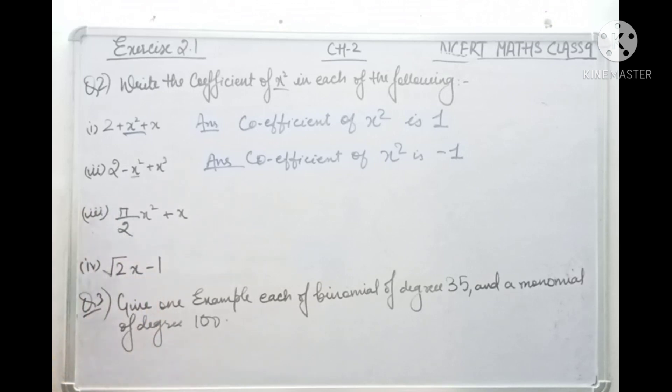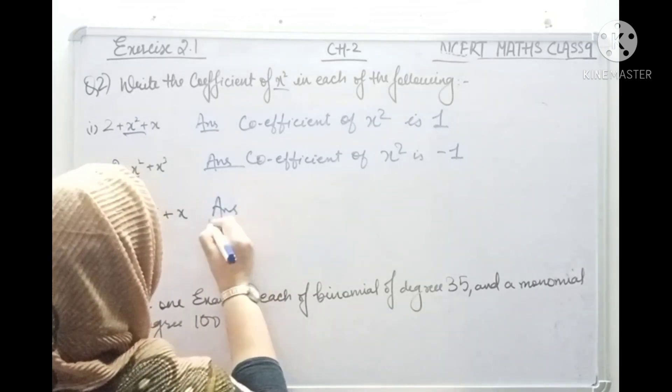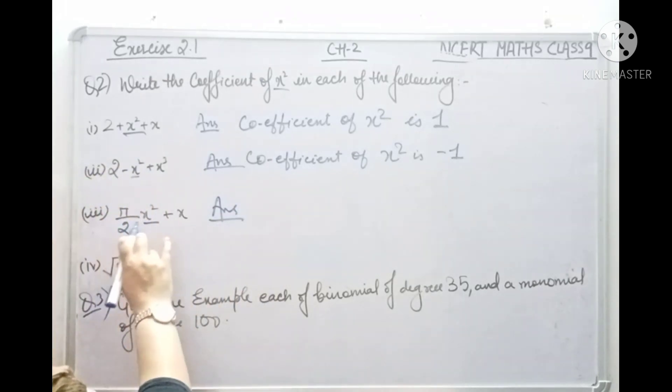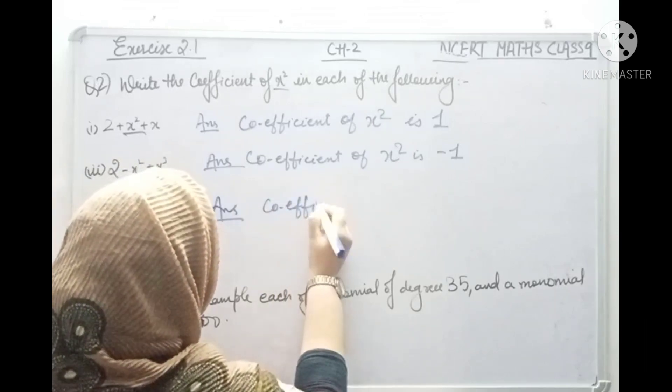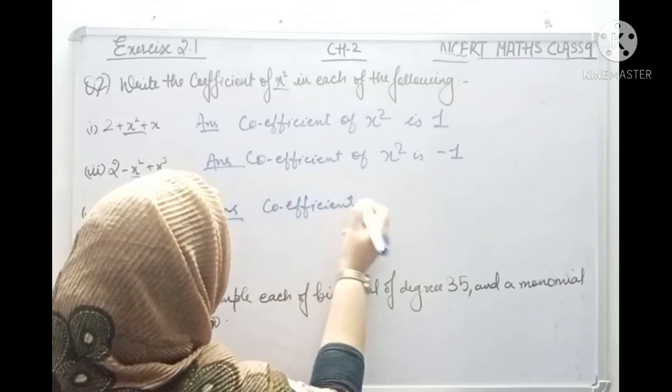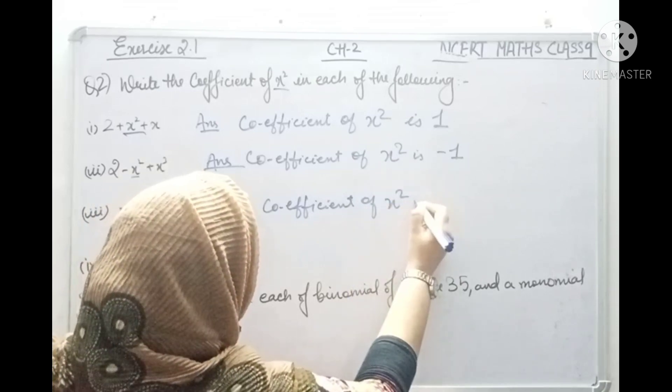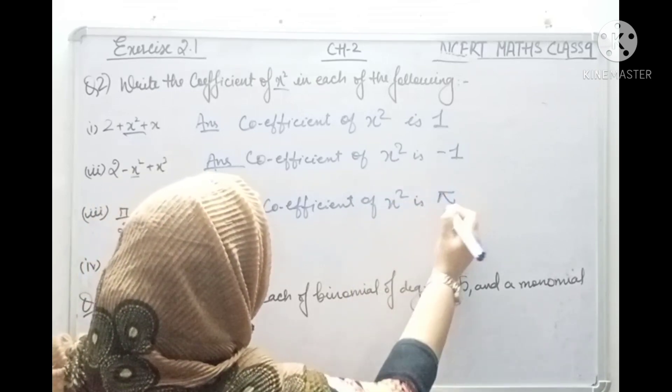Now here, the third one, coefficient of x square. The coefficient of x square is pi by 2.